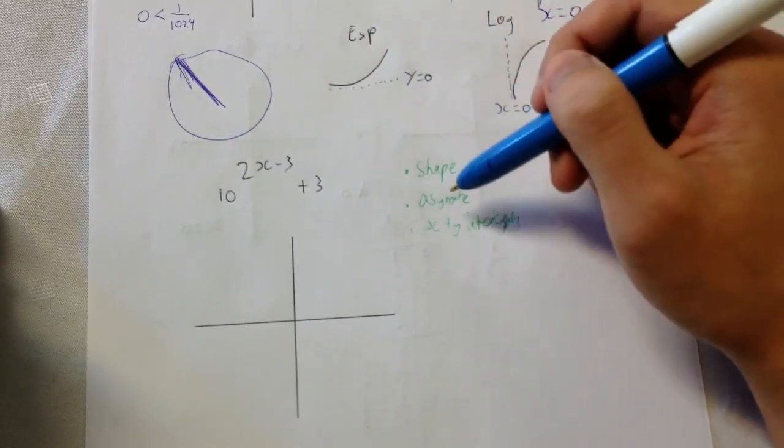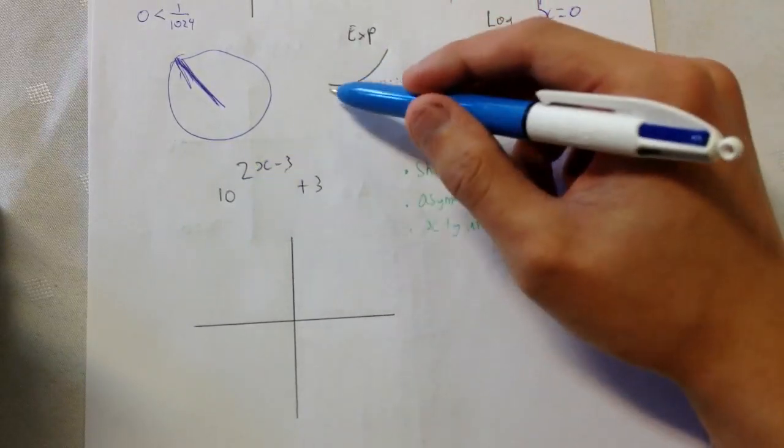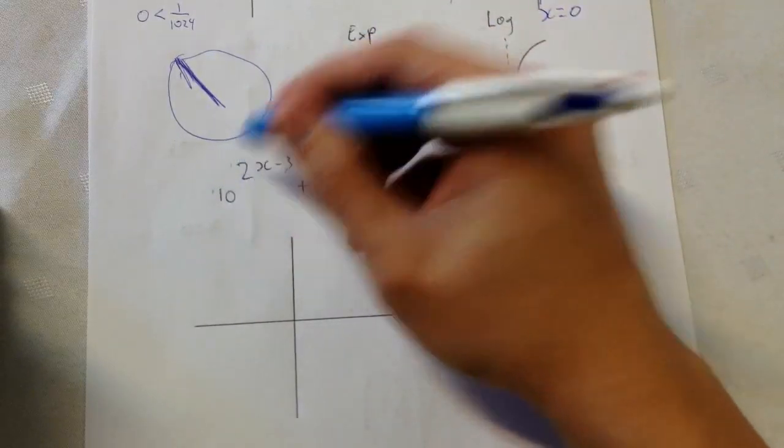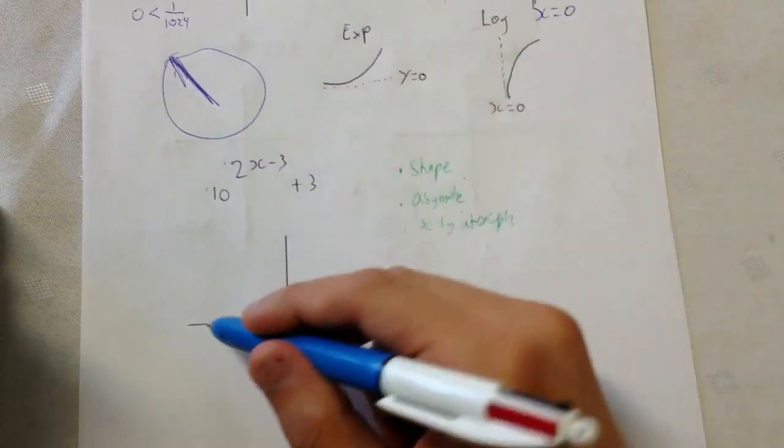So, here the first thing is where is the shape? The shape is going to look like that. Because this is positive and the number in front of x is positive. So we know it's going to look something like this.